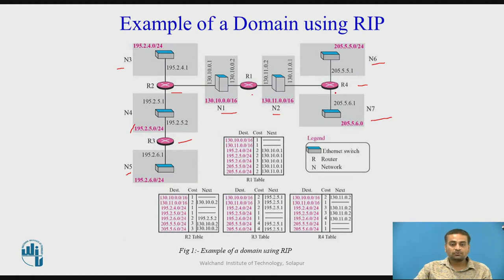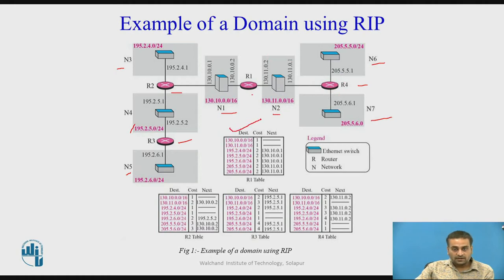We have four routers R1, R2, R3, R4 and networks N1, N2, N3, N4, and these networks are connected to the routers. This is the routing table of router R1. As networks N1 and N2 are directly connected to R1, the cost or distance to these two networks will be 1. In the first two entries of this routing table, N1 and N2 have a cost of 1, and in the next-hop column there is no entry because these two networks are directly connected.